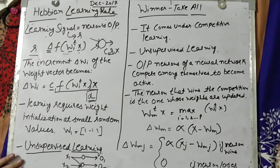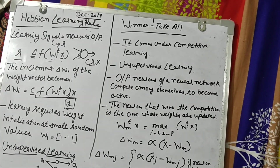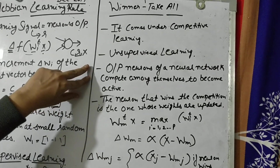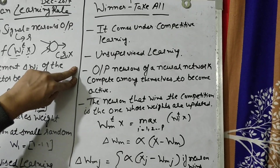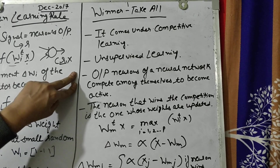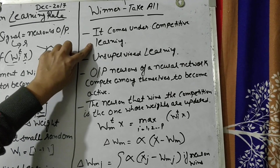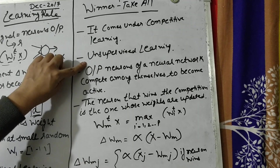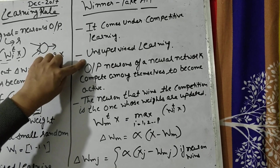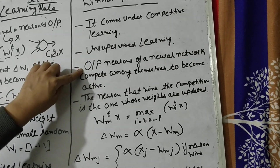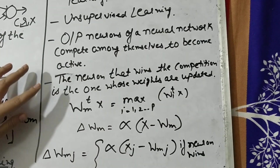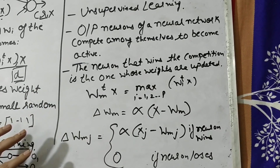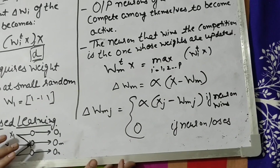In the December 2017 paper, another algorithm worth 10 marks is Winners-Take-All. The Winners-Take-All learning rule is actually a competitive learning rule, and it also comes under the unsupervised learning method. The output neurons of a neural network, as the name says, compete among themselves to become active.